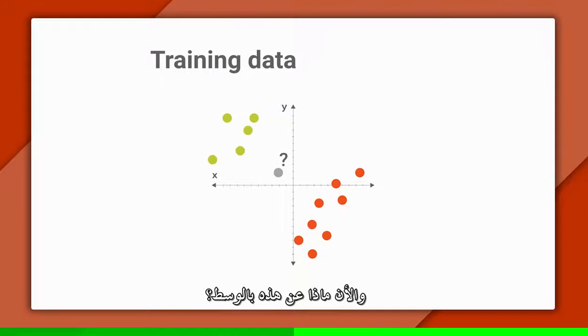Now what about this one, right in the middle? Imagine that this dot is equidistant to the nearest green dot and the nearest red one. There's a tie, so how could we classify it?